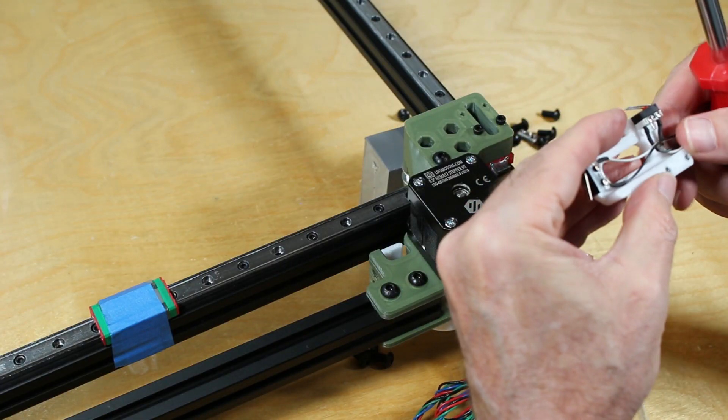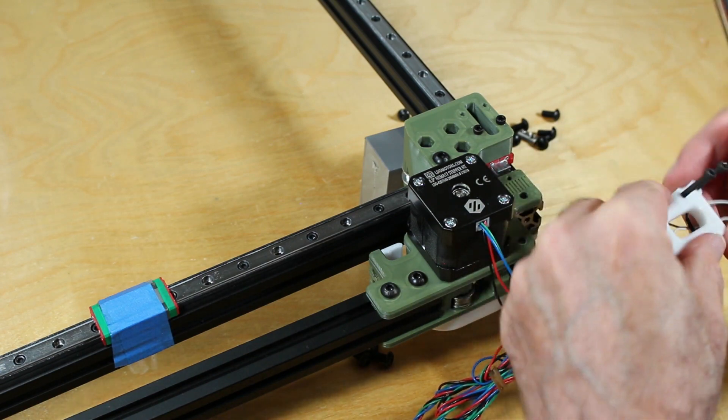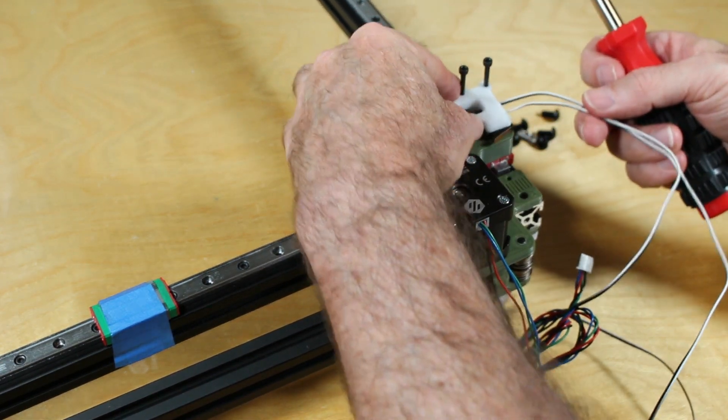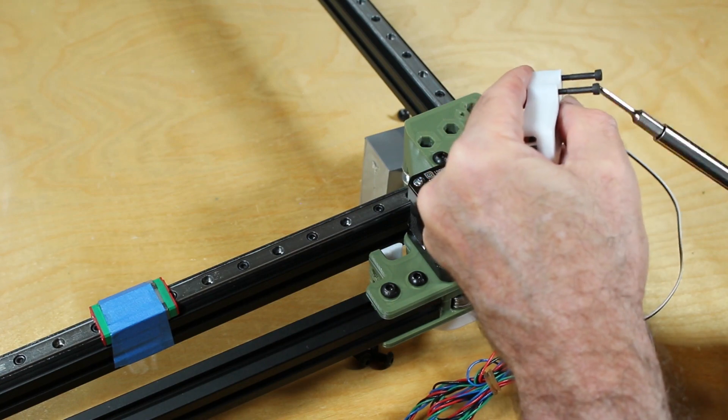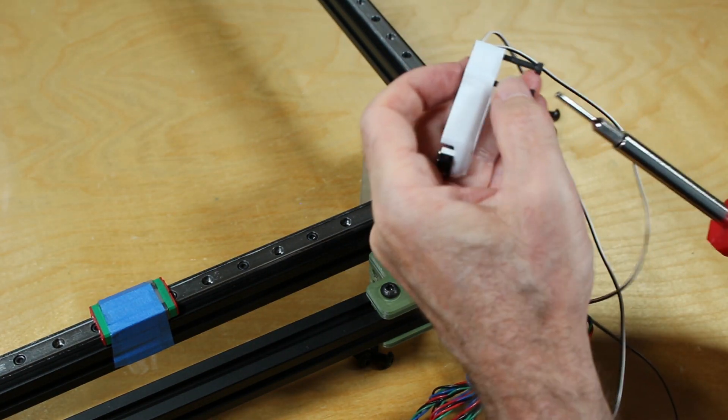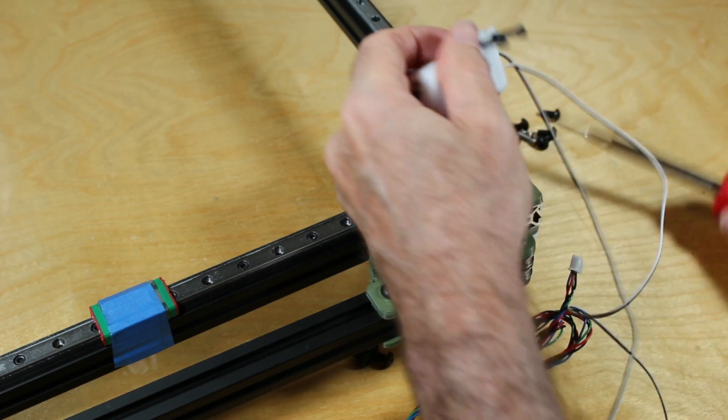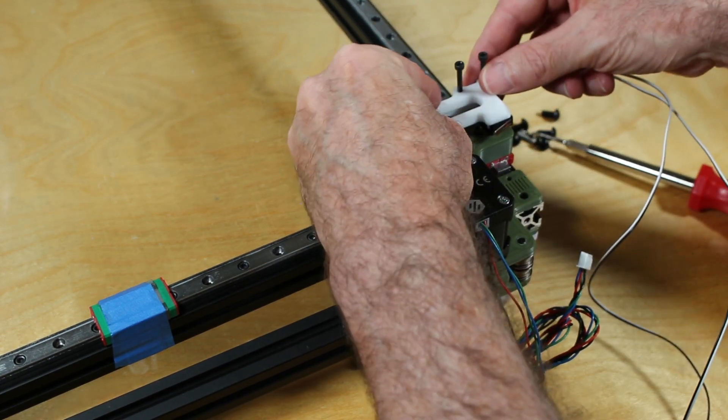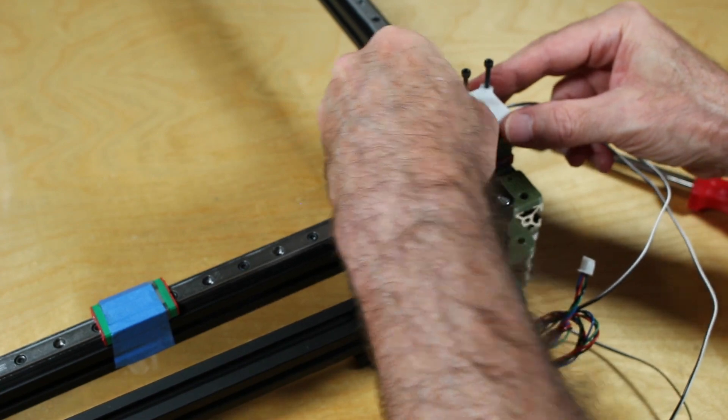So here I am again, threading the screws in most of the way until they just barely protrude out the other end. And that'll make alignment with the block easier. And once I have those aligned, I can go ahead and thread those in all the way. And the end stop is installed.